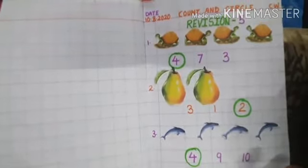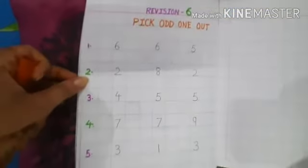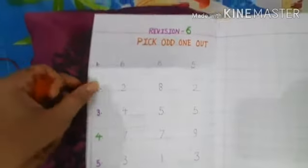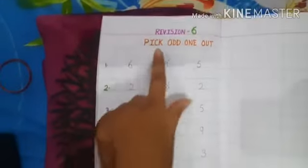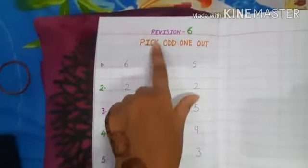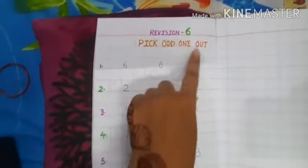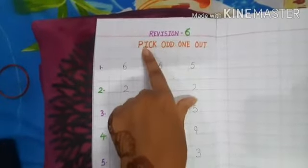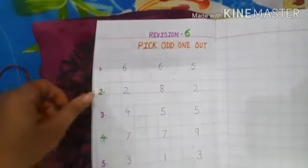Okay, now come to the next page. Revision number 6: Pick odd one out.